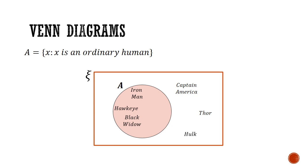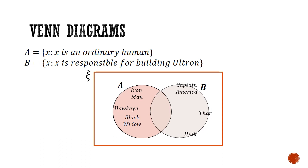We can also say that those three elements, Captain America, Thor and Hulk are not inside set A. So they are in A'. Let's introduce a second set. We'll let set B be the people responsible for building Ultron. That would be Iron Man and the Hulk. So let's rearrange these elements to better fit these two sets.